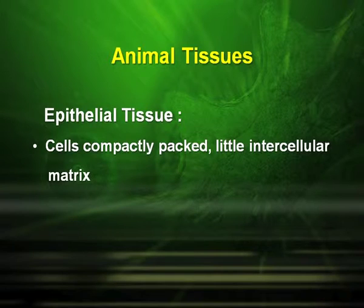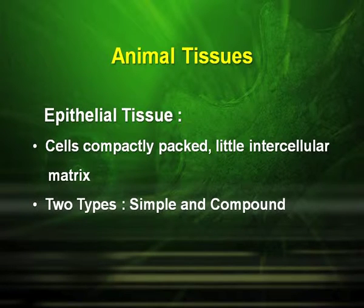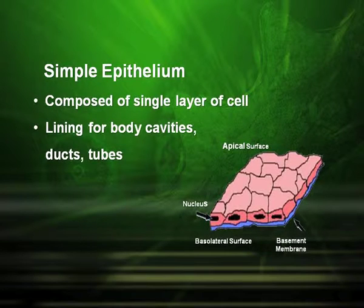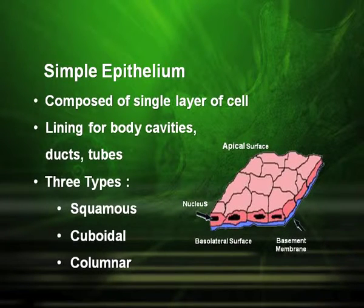The cells in epithelial tissue are compactly packed with little intercellular matrix. There are two types of epithelial tissues — simple and compound. Simple epithelium tissues are divided based on the shape of their cells. They are composed of a single layer of cells and are found in the lining of body cavities such as ducts and tubes. Based on shape, they may be squamous, cuboidal, or columnar.